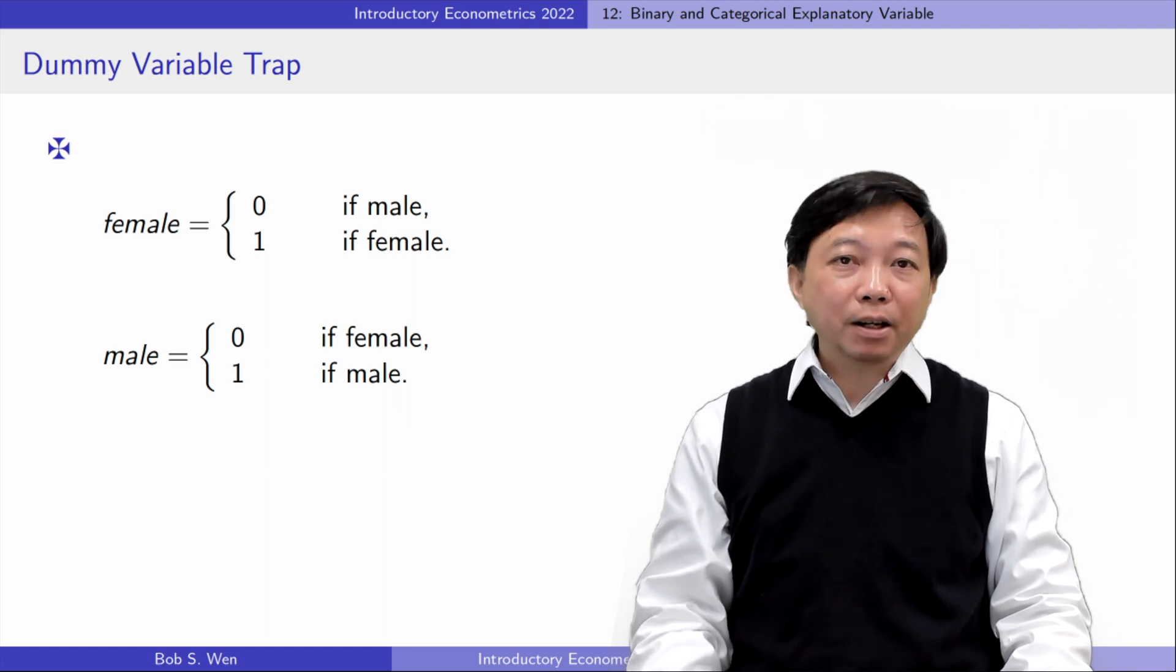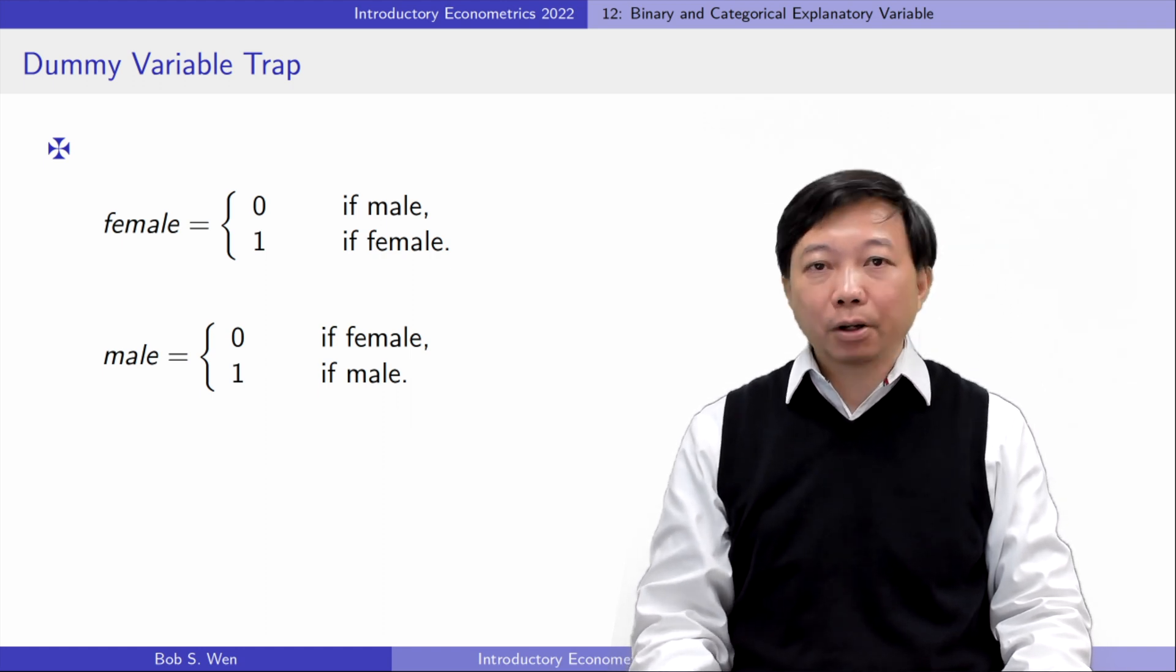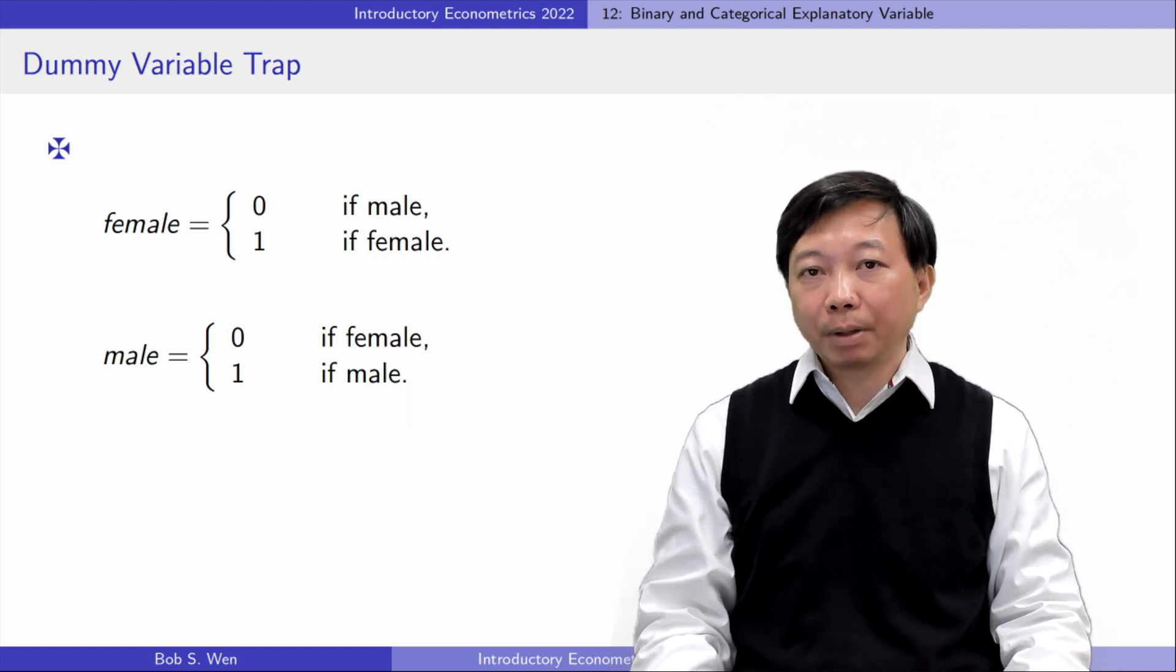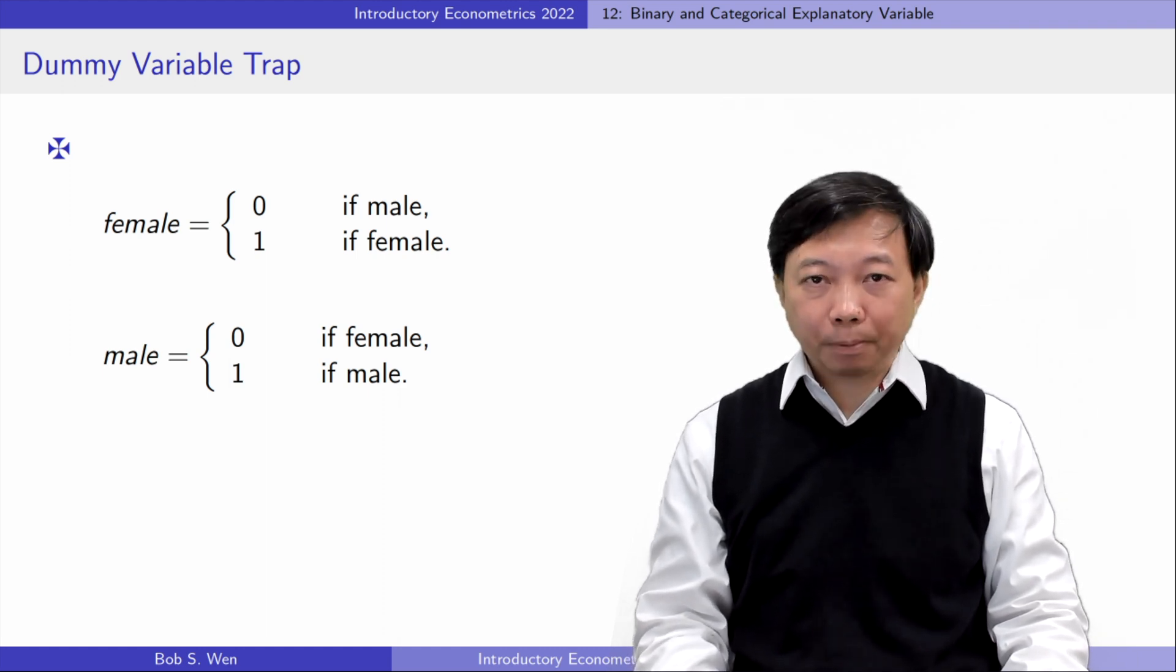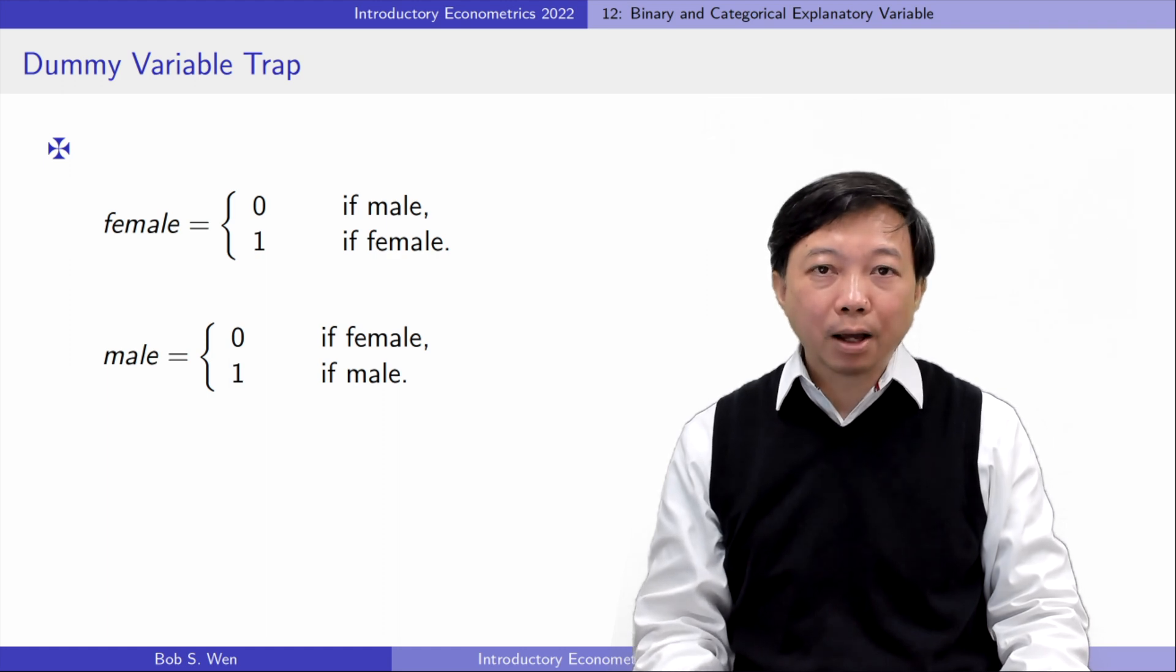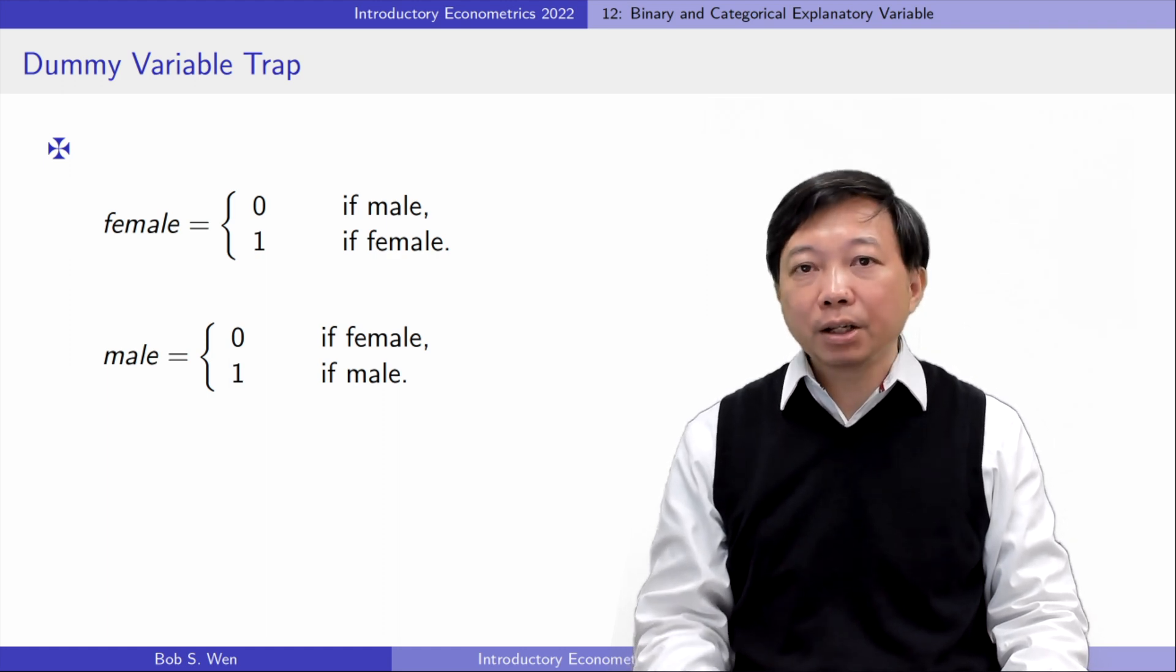When the explanatory variable is binary, we should avoid the dummy variable trap. A dummy variable trap arises when the two dummy variables are perfectly collinear.